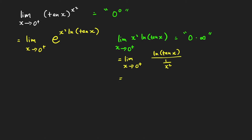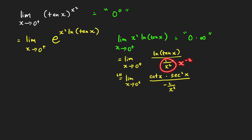Applying L'Hôpital's rule, we get the limit as x approaches 0 from the right of the derivative of ln of tangent x. That is 1 over tangent x, which equals cotangent x, times the derivative of tangent x, which is secant squared x. The derivative of the denominator 1 over x squared is negative 2 over x cubed.